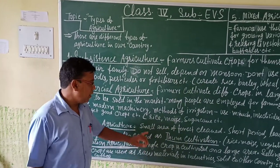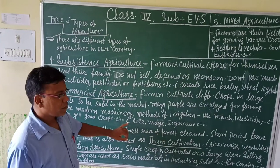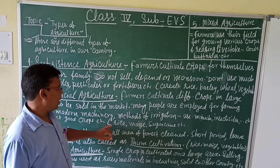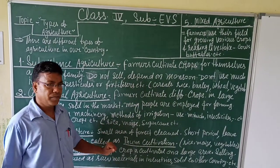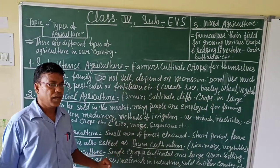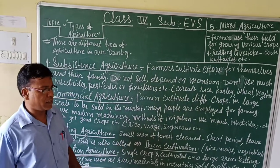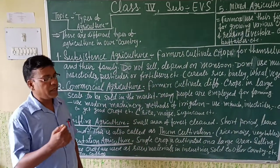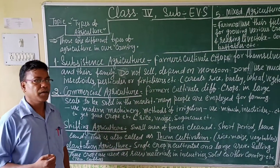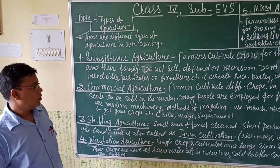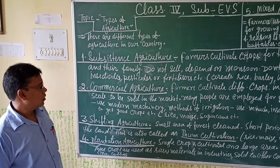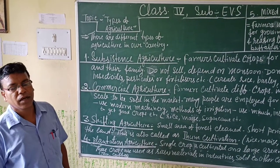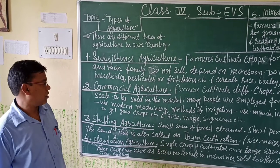They also use much pesticides and fertilizer to get good crops. They mainly cultivate rice, maize, sugar, and other crops, and sell them in the market. This is what we see in commercial agriculture.